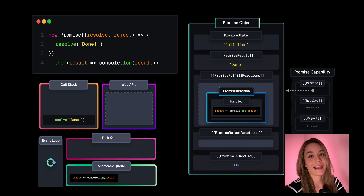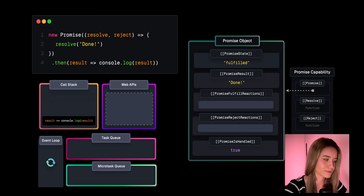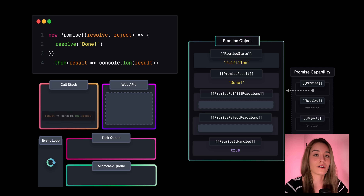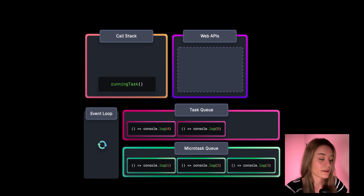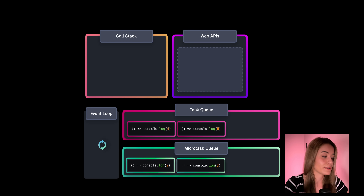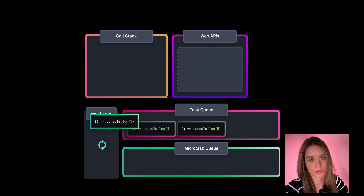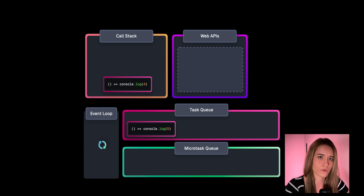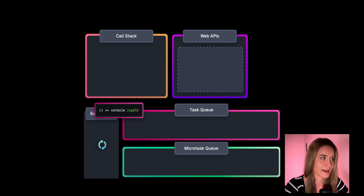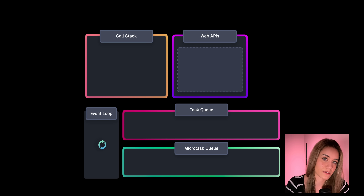This is where the asynchronous part of promises comes into play. As a quick refresher: whenever the call stack is empty, the event loop first checks the microtask queue. Whenever that queue is empty, it goes to the task queue — also called the callback queue or macro task queue. What's important here is that the microtask queue gets priority.